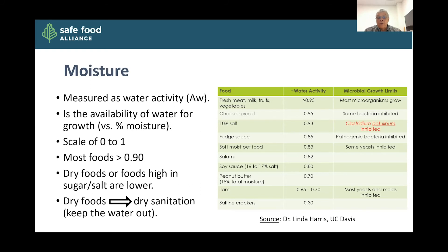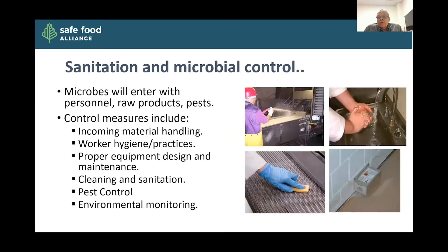If we're processing dry foods like tree nuts, you need to practice what is called dry sanitation — keep the water out, use practices like vacuuming, blowing, and wiping down with sanitizers and chemicals that don't have any water in them. If we introduce water into a dry food, it can actually make it more likely to support microbial growth. So now that we've gone through some of these parameters, let's think about how we control microbial growth in regards to sanitation.